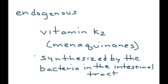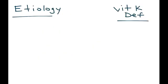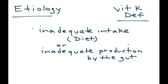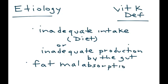Now let's get into vitamin K deficiency and some of its causes. Obviously, inadequate intake or inadequate production will result in vitamin K deficiency — either you're not eating enough green vegetables or your gut is not producing enough vitamin K. Another reason is fat malabsorption: any medical condition in which the body is not absorbing fat will also result in vitamin K deficiency, because dietary fat enhances the absorption of vitamin K.